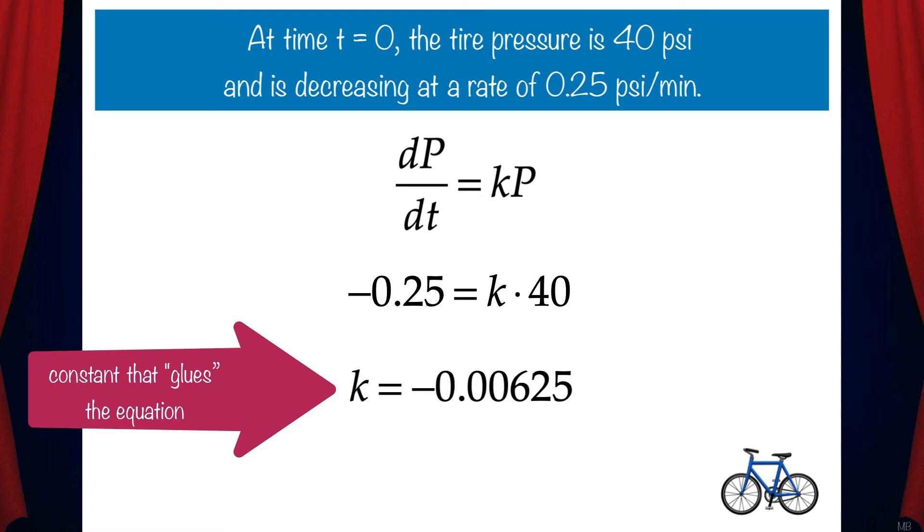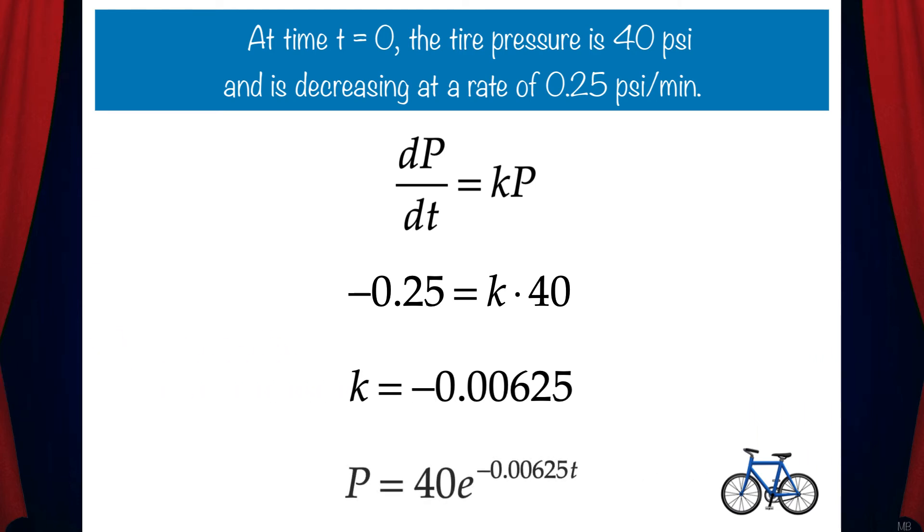We can think of k as a constant that glues together the equation for this particular scenario. And so now we can write the pressure equation: P equals 40e to the negative 0.00625t. Note that I just plugged in 40 for big C because that's the initial pressure.